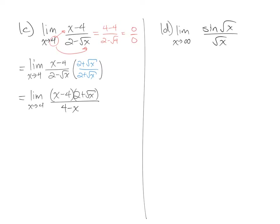It might not look like it immediately, but there is something here that cancels very specially. We have a factor x minus 4 in the numerator and a factor 4 minus x in the denominator. These factors have the same two terms but in the exact opposite order — x minus 4 versus 4 minus x. When that happens, you can reduce these factors to a negative 1. If you divide this negative 1 into each term, you get the limit as x approaches 4 of negative 2 minus the square root of x. Finally, we can substitute in 4 and get negative 2 minus the square root of 4, which is negative 2 minus 2, giving a final answer of negative 4.